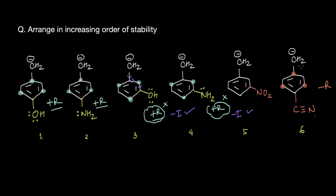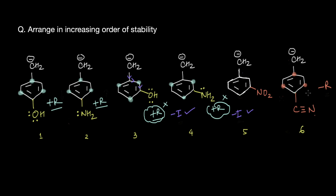When CN is attached at para, drawing resonating structures shows that a positive charge develops at the ortho and para positions of the cyano group. A positive charge on a carbon represents an empty orbital, and a negative charge represents a lone pair. So when we have a lone pair directly adjacent to an empty orbital, a pi bond can form, delocalizing the negative charge over the cyano group. Therefore, an electron-withdrawing group at para stabilizes the carbanion via resonance.